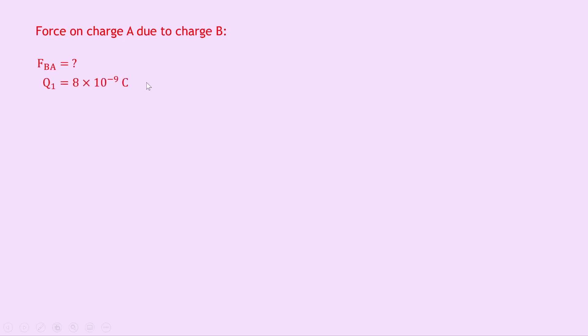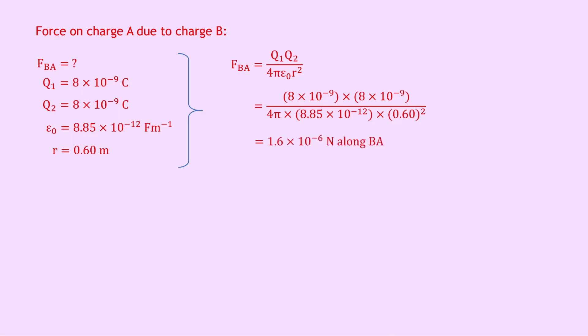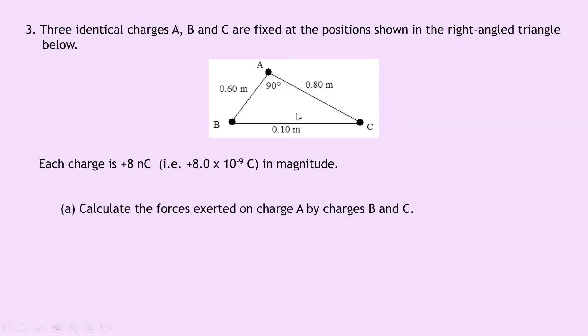Finding the force on charge A due to charge B, FBA: Q1 is 8 times 10 to the minus 9 coulombs, Q2 is 8 times 10 to the minus 9 coulombs, epsilon naught is 8.85 times 10 to the minus 12 farads per metre, and the distance between A and B is 0.6 metres. Writing FBA equals Q1Q2 over 4 pi epsilon naught R squared and substituting in gives 8 times 10 to the minus 9 times 8 times 10 to the minus 9 divided by 4 pi times 8.85 times 10 to the minus 12 times 0.6 squared, giving 1.6 times 10 to the minus 6 newtons along BA — repulsion, so charge A is pushed away from charge B.